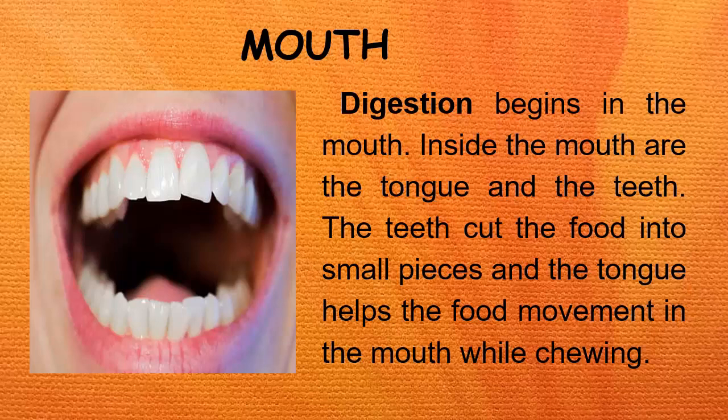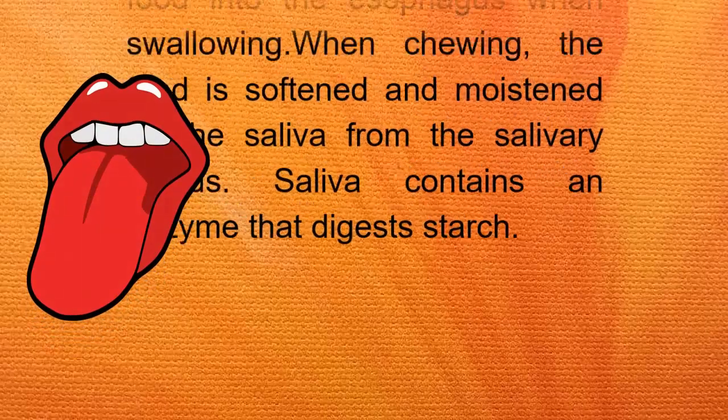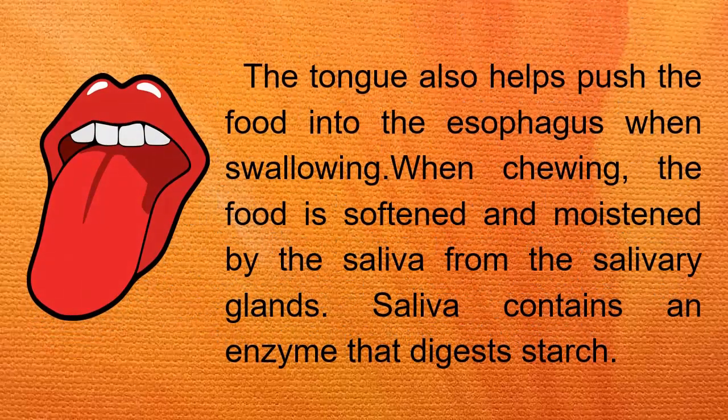Digestion begins in the mouth. Inside the mouth are the tongue and the teeth. The teeth cut the food into small pieces and the tongue helps the food movement in the mouth while chewing. The tongue also helps us push the food into the esophagus when swallowing. When chewing, the food is softened and moistened by the saliva from the salivary glands. Saliva contains an enzyme that digests starch.